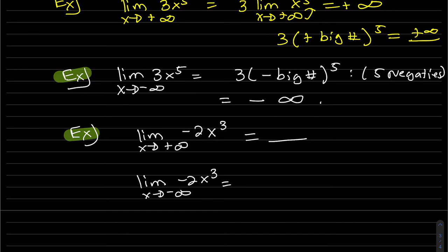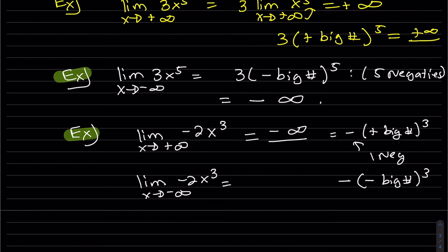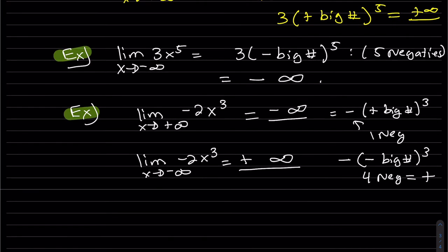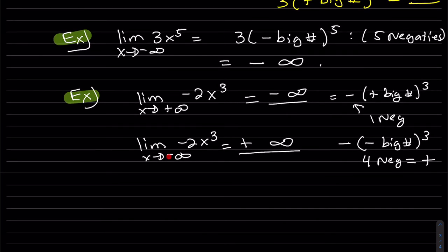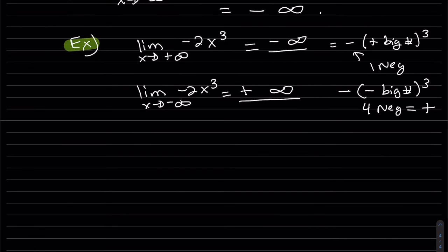Keeping or pulling out the negative: it's negative times a positive big number cubed, which is one negative — negative infinity. For the other case, we have a negative to a negative big number to the third — three negatives plus one on the outside gives four negatives, which equals positive infinity. Count your negatives when plugging in.